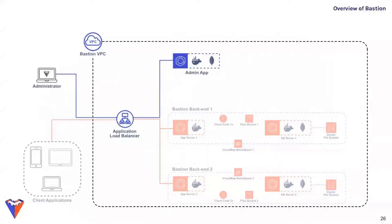When Bastion is first deployed, a CloudFormation script creates a new Virtual Private Cloud containing the admin app and any individual Bastion backends. All traffic from outside the VPC is first routed to an Application Load Balancer, which routes it to its destination. The admin app server is a Node.js application built with Express, with a MongoDB instance for data storage; both run in Docker containers managed by AWS Elastic Container Service with Fargate.